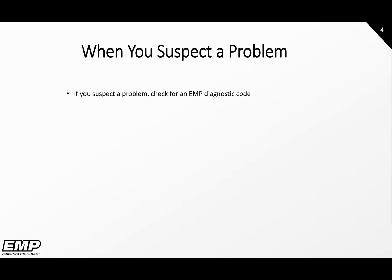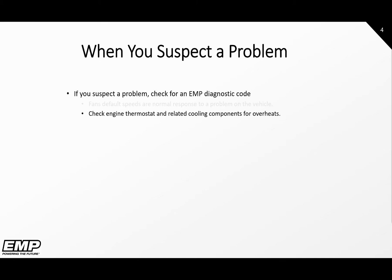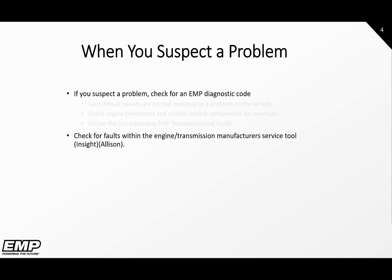When you suspect a problem with the EMP cooling system, the first thing you should do is check for active diagnostic codes. You can count the blink codes from the diagnostic lamp or connect to the system via the EMP service tool. It is recommended to utilize the service tool since it will tell you exactly what the code is and you will also have access to the troubleshooting manual. In some cases you may hear the fans all running at default speed. This is a normal response to a problem on the vehicle. For example, if the ECU from the engine is not broadcasting temperature information over the J1939 network, the system will turn all fans to default speed to protect the engine from overheating. Check the engine thermostat and related cooling components for overheats. If there are active codes present, follow the troubleshooting guide. You will also want to check for faults within the engine transmission service tool, like Insight, as our system may be reacting to a problem with the engine or transmission.